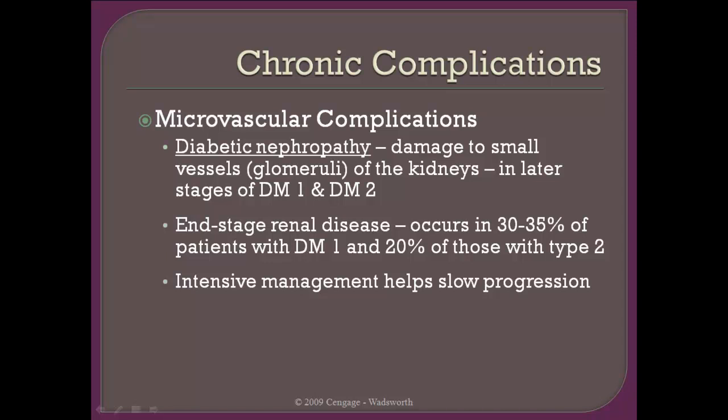Another condition is diabetic nephropathy, which is simply damage to the kidneys. Those very small vessels present in the kidneys that allow for filtration of the blood are damaged, and this happens in later stages of type 1 as well as type 2. End-stage renal disease will ultimately occur because the kidneys are not good at replacing tissue — when kidney tissue is damaged, it does not grow back. End-stage renal disease occurs in somewhere between 30 to 35% of patients with type 1 diabetes, and 20% of those with type 2 diabetes. Intensive management can help slow that down.